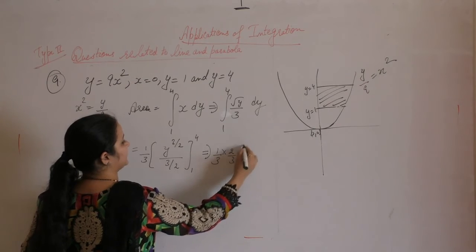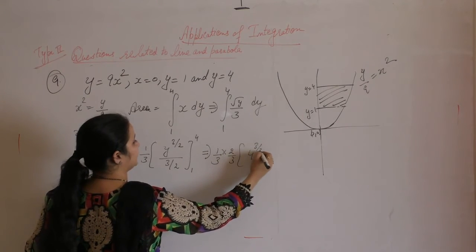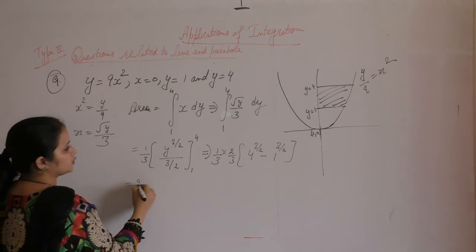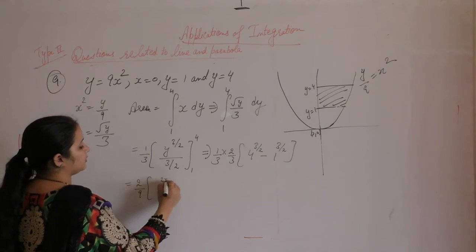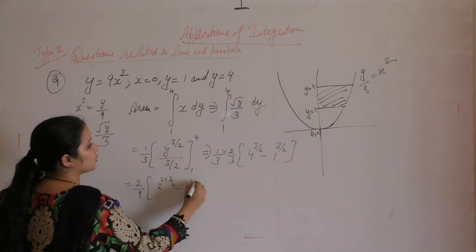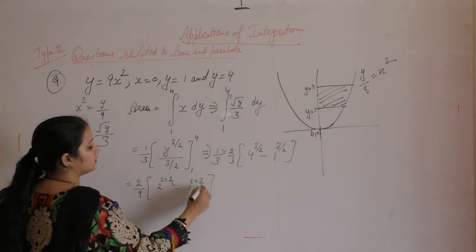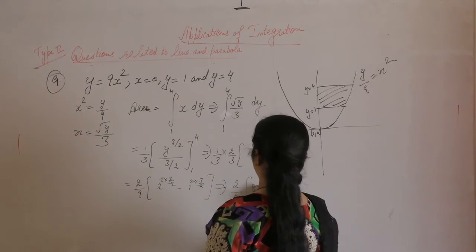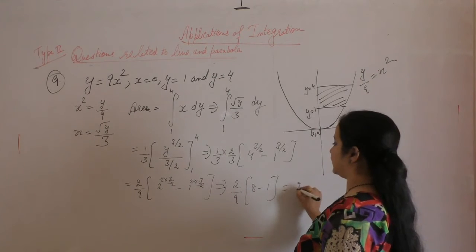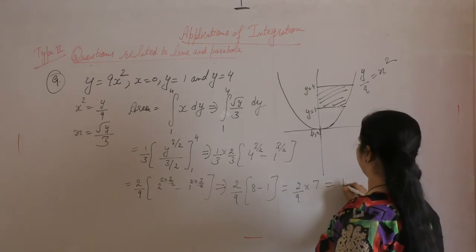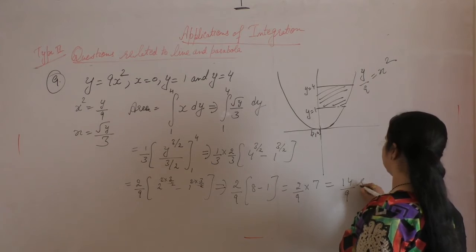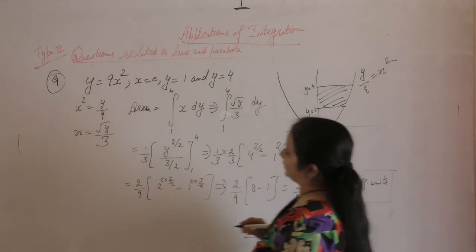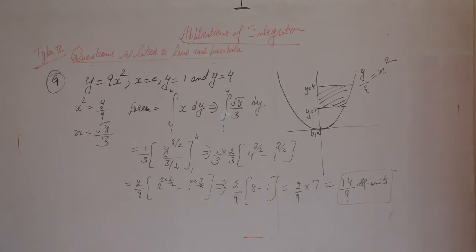(1/3) × (2/3) × [4^(3/2) − 1^(3/2)] = 2/9. We write 4 as 2², so 4^(3/2) = 2³ = 8, and 1^(3/2) = 1. So 2/9 × (8 − 1) = 2/9 × 7 = 14/9 square units.